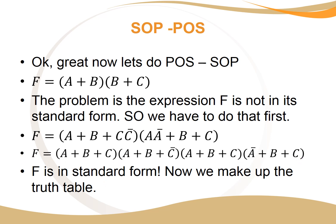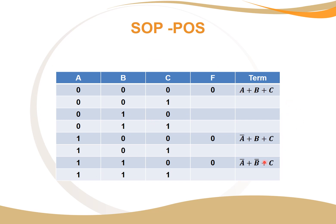Now we transfer to the truth table. Remember, these are POS terms so we're looking for zeros — the unique combination which makes each term zero. If A is zero, B is zero, and C is zero, that term is zero. Similarly, where A-not appears with a one, not-one is zero, and zero or zero or zero equals zero. For A-not or B-not or C-not, substituting ones for each variable gives zero. Now we've filled in our POS terms. There's a duplicate, but since they occupy the same space in the truth table, we don't need to worry.